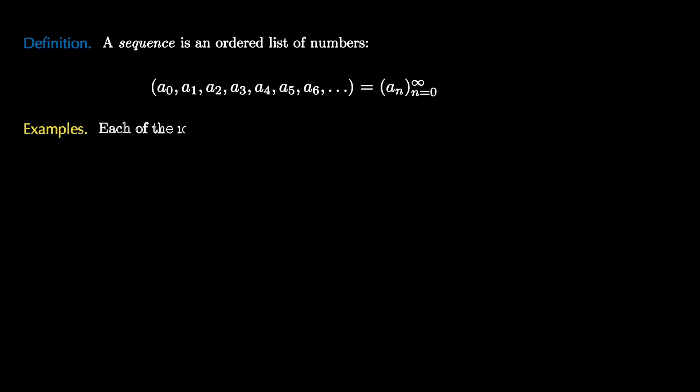In order to do this formally, we'll have to define what we mean by a sequence. A sequence is an ordered list of numbers. We write this using a parenthesis and then we list off the numbers a₀, a₁, a₂, a₃, and so on. We can list this in shorthand notation by writing (aₙ) and saying where n starts and where it finishes, or we use infinity if it never ends.